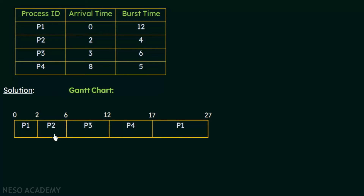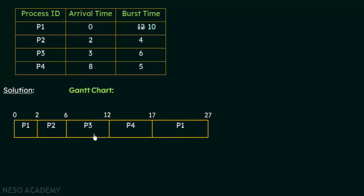At the sixth millisecond, P2 releases the CPU. P4 has not yet arrived — its arrival time is 8 milliseconds. The remaining processes are P1, with a remaining burst time of 10 milliseconds (since it already executed 2 milliseconds), and P3 with a burst time of 6 milliseconds. Since P3's 6 milliseconds is less than P1's 10 milliseconds, P3 gets the CPU at the 6 millisecond mark.